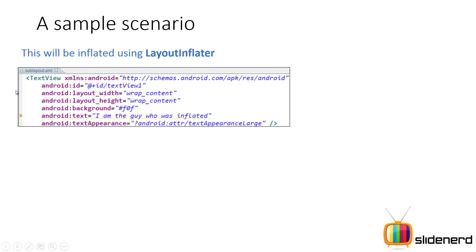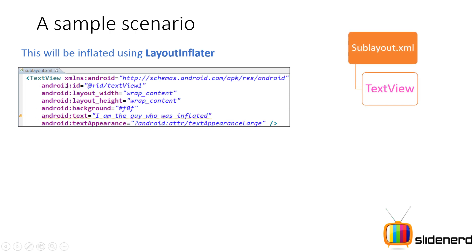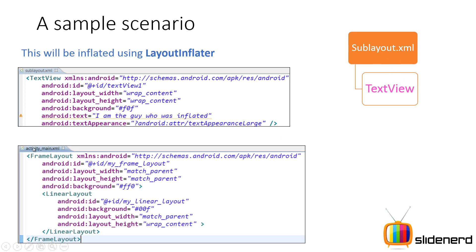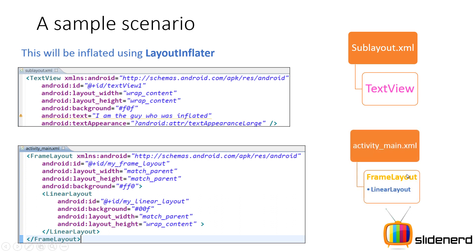We have our TextView which is inside a sublayout.xml file which we want to include. We have the sublayout.xml with the TextView inside. Then I have the activity_main which contains a FrameLayout with a yellow background and a LinearLayout with a blue background. I have again represented those colors here — FrameLayout with yellow background, LinearLayout with a blue background, and my TextView has a pink or magenta background.